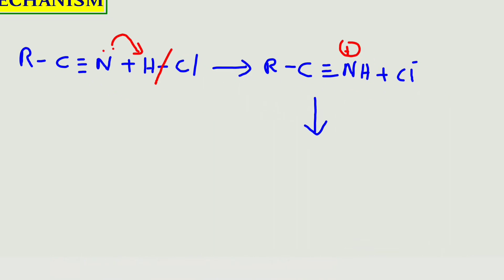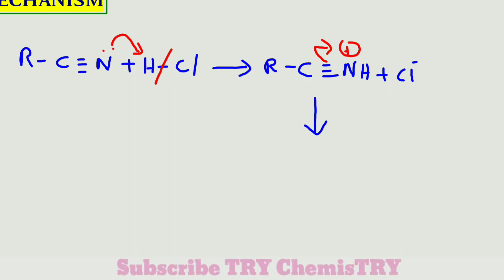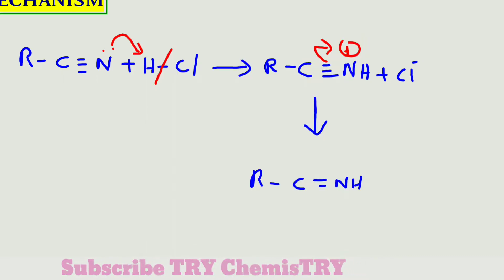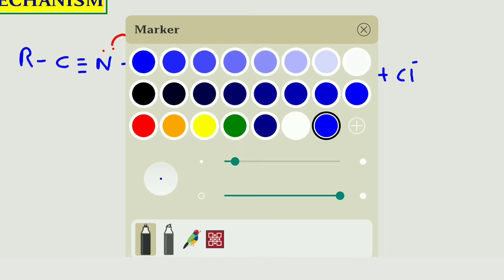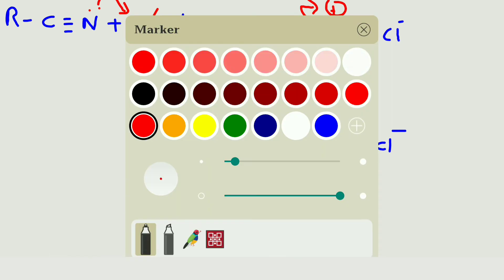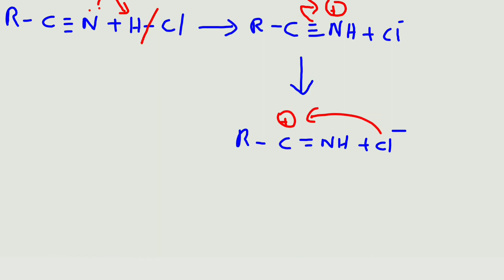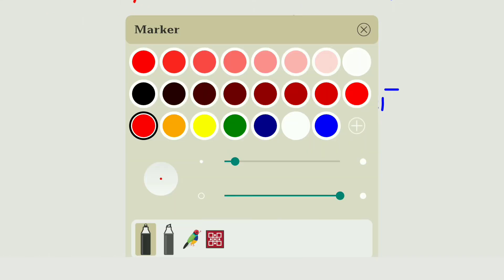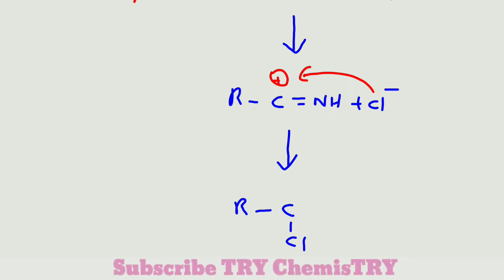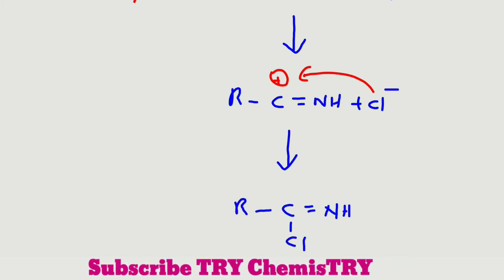In the next step, one of the pi bonds breaks and the carbon donates one electron to the nitrogen. We get R–C=NH with a positive charge on the carbon, plus Cl⁻. The Cl⁻ then neutralizes the carbocation by bonding with it, giving R–CCl=NH.